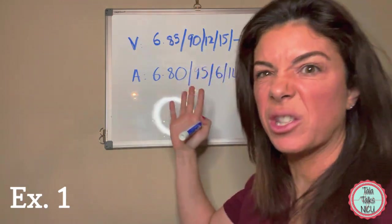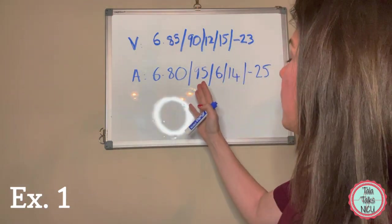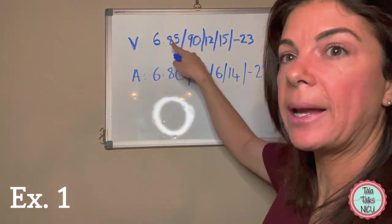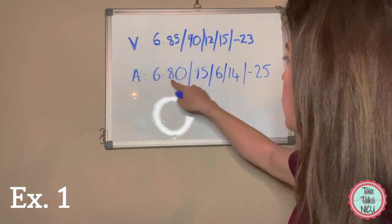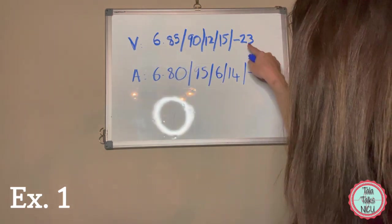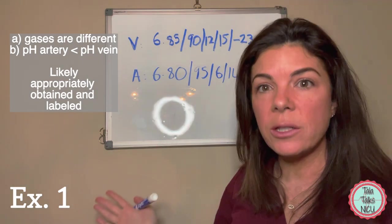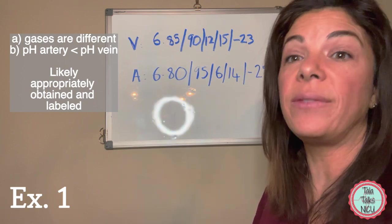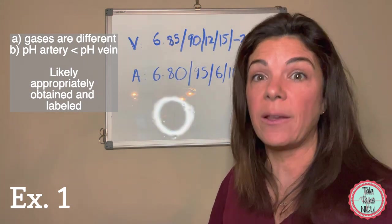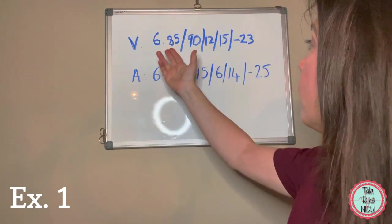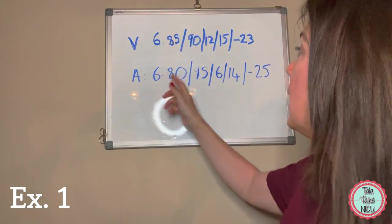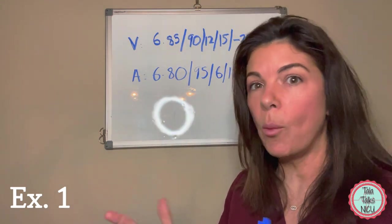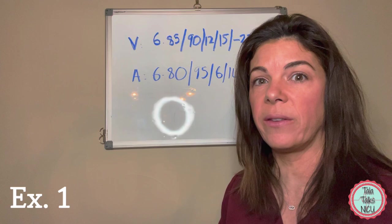Let's delve into this a little bit more. I know you're all looking at it thinking this is just really bad, but what else can we see? First of all, the gases are different and the arterial is slightly more acidotic than the venous, so 6.8 versus 6.85 and minus 25 versus minus 23. We can assume that these gases really do represent the artery and the vein and that they were correctly obtained and labeled.